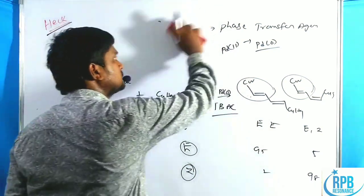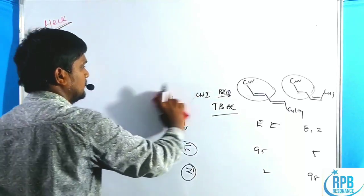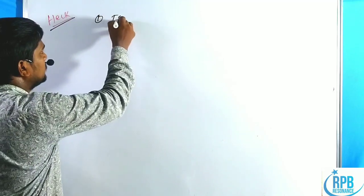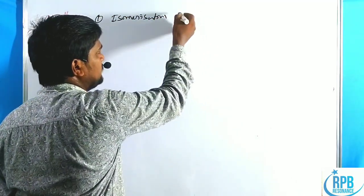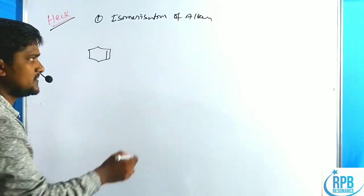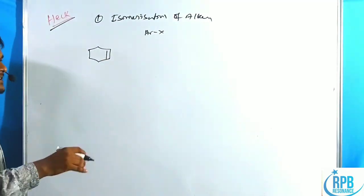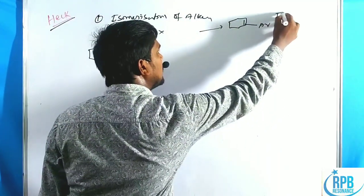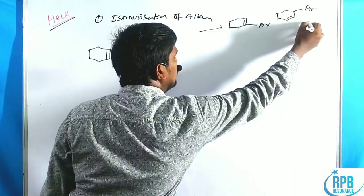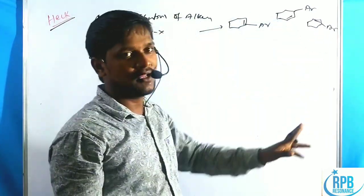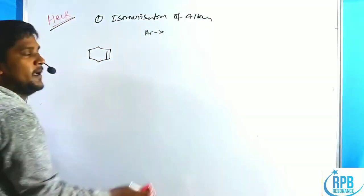Now let us discuss the third application — alkene isomerization. In the Heck cross-coupling reaction, the double bond may isomerize to an adjacent position. For a general olefin treated with ArX under palladium, instead of obtaining the expected direct coupling product, we obtain isomerized products where the double bond has shifted.